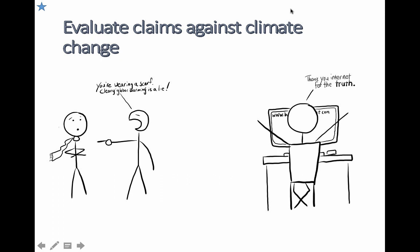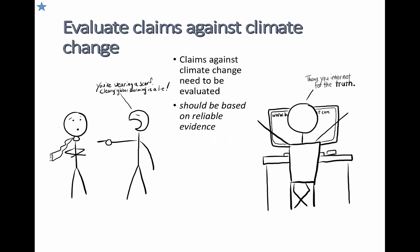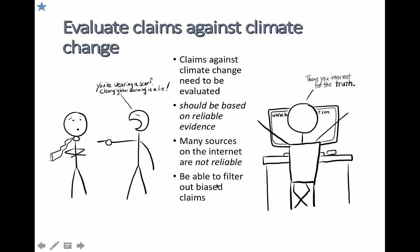Finally, we need to be able to evaluate claims against climate change. The internet is not always reliable — there's good information and bad information. You have to filter it out and understand what is and isn't good science. Facetious claims based on simple evidence can lead to easy but unscientific conclusions. Claims about climate change must be based on reliable evidence, and you should filter out biased sources. You can link this to TOK — discussing the psychological impacts of advertising, news, and politics on our understanding of science.